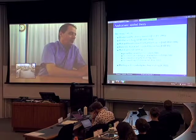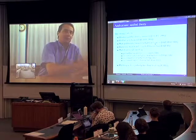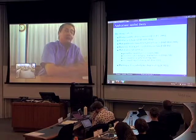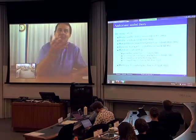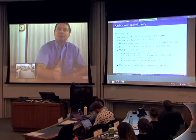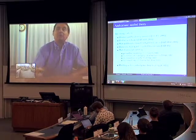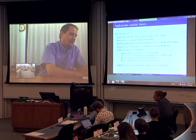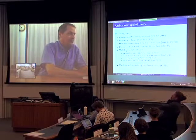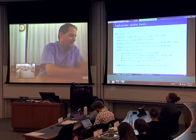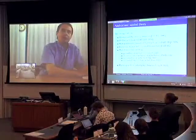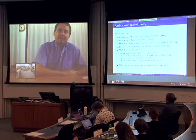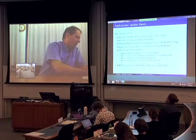There are also papers on children and divorce, on male and female demand for higher education — I'm going to spend time on that one because I think it's important — and papers on the dynamics of divorce laws and their impact on intra-household allocation using explicit matching models. There are also papers on multidimensional matching and on matching with imperfectly transferable utility.